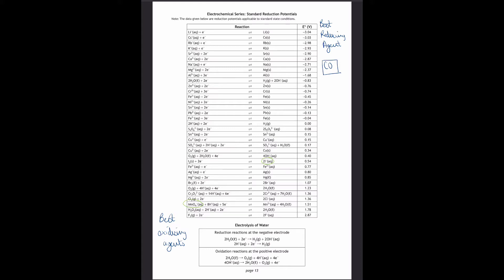If we look at the electrochemical series for this — iodide is here and permanganate is here — iodide is not the best reducing agent you can get, but it's suitable to use to reduce permanganate because it's above it in the electrochemical series. Anytime you're looking for a reducing agent, you need it to be above that reaction on the right-hand side. Anytime you're looking for a suitable oxidizing agent, you need to look below the reaction on the left.